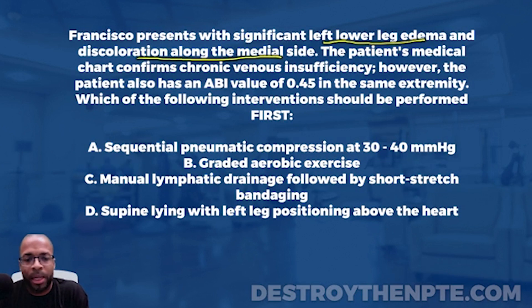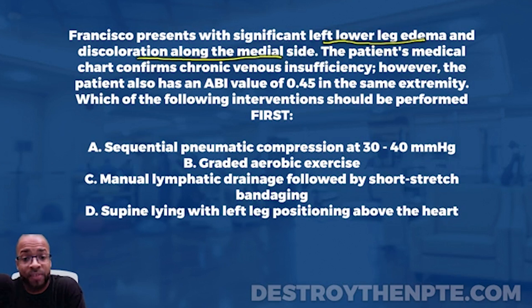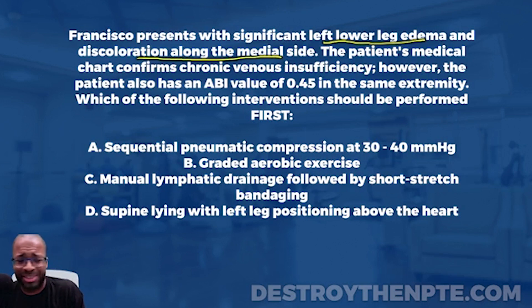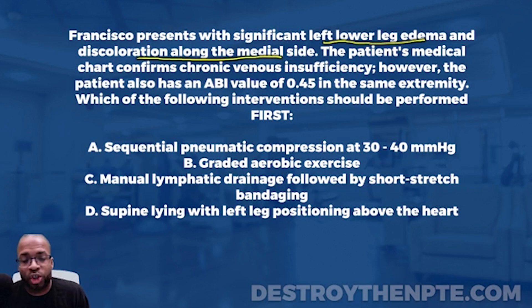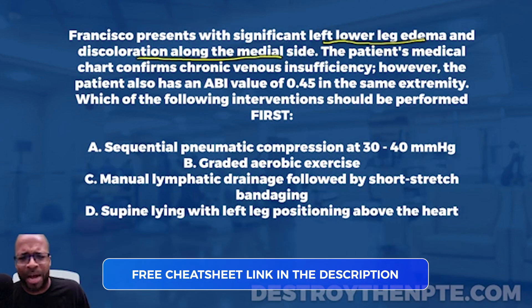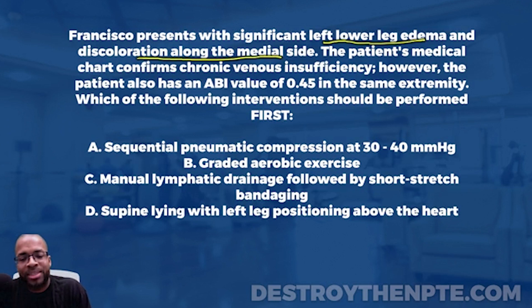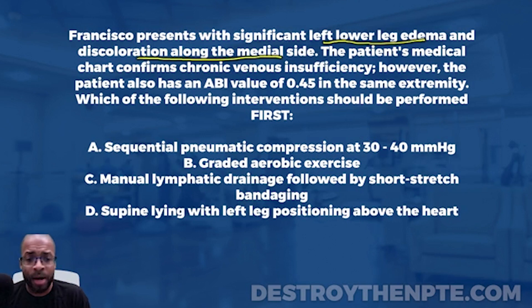You may want to look up hemosiderin staining — you need to know it for the NPTE. It's very consistent with venous insufficiency. What can happen is that blood pooling down in the lower extremities can actually escape from the vessels and settle into the surrounding tissues. The body attacks it because red blood cells aren't supposed to be randomly outside the vessels. The body tries to break it down, and the components that come out of that red blood cell create the hemosiderin staining — a discoloration of the medial side of the leg.